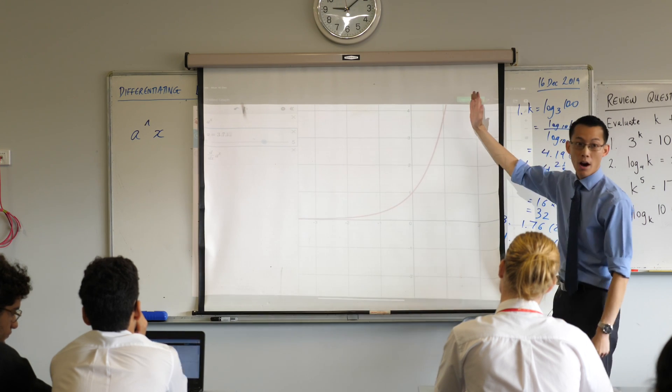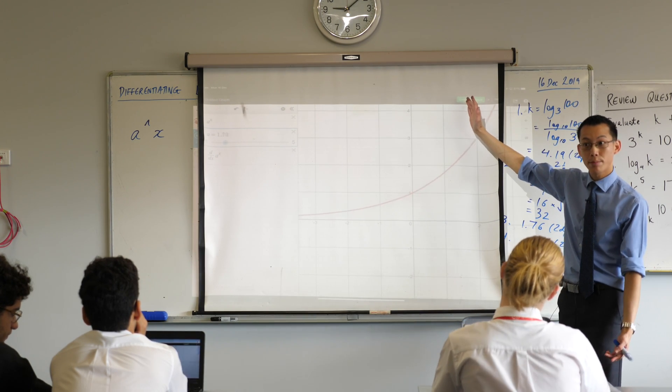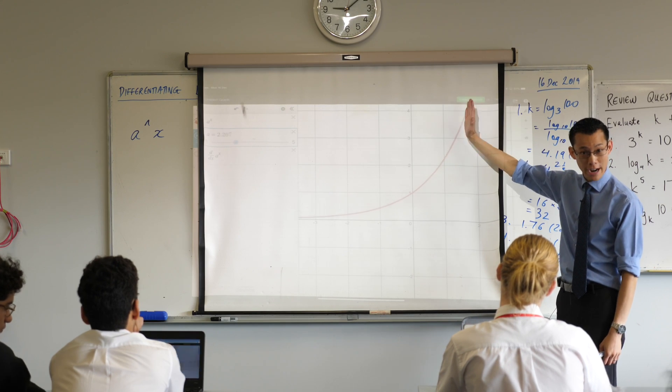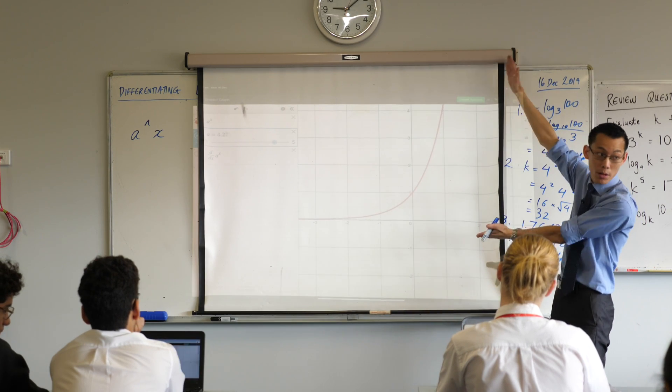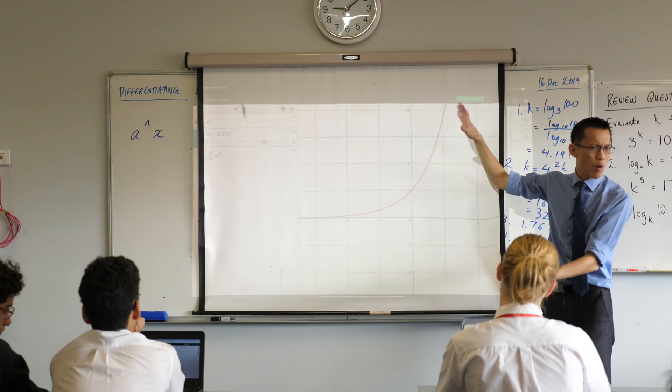The gradient of an exponential curve, no matter which exponential curve you've got, it starts down low because it's very shallow over there, and then it becomes very high because this part of the curve is really steep. Steep gradient means a really large positive gradient.